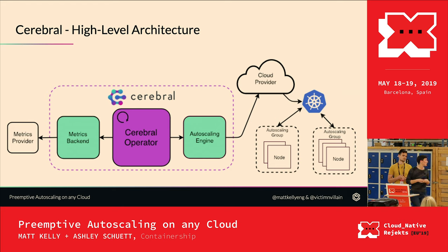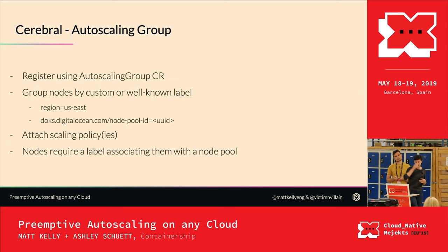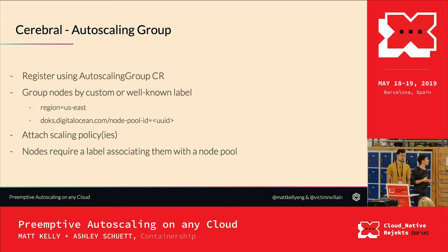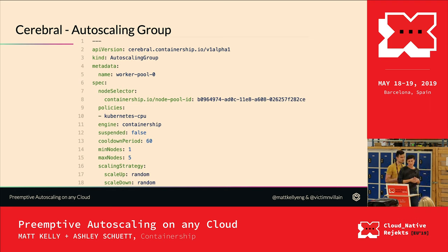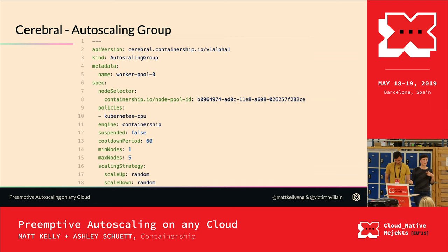At the center is the Cerebral operator, which looks for autoscaling engines and metrics backends added to the cluster, knowing how to talk to the cloud provider and chosen metrics backend. The metrics backend interfaces with whatever metrics provider you're using. The autoscaling group is a CRD applied to your cluster, from which you create an autoscaling CR. You can define groups on different constraints — region, DigitalOcean node pool ID — and attach scaling policies to your autoscaling groups.